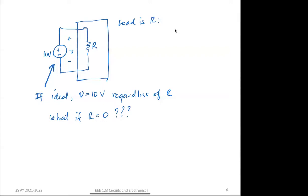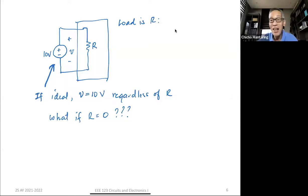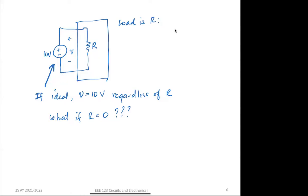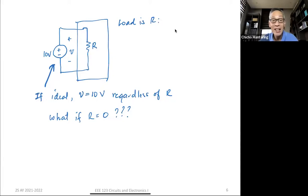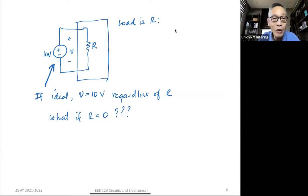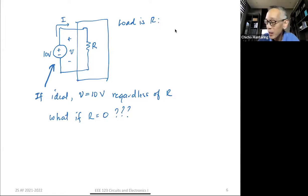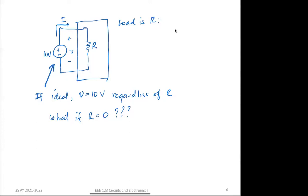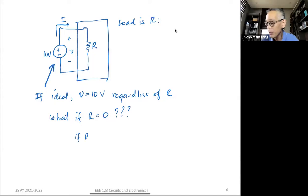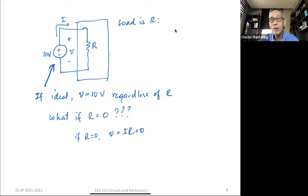Students answer: one says 10 volts, another says infinite. Based on Ohm's law, V equals IR, and if R equals zero, V will be equal to zero. But we said this is an ideal voltage source, so the voltage should not change regardless of R. There's a contradiction: the ideal source says 10 V, but Ohm's law says 0 V.